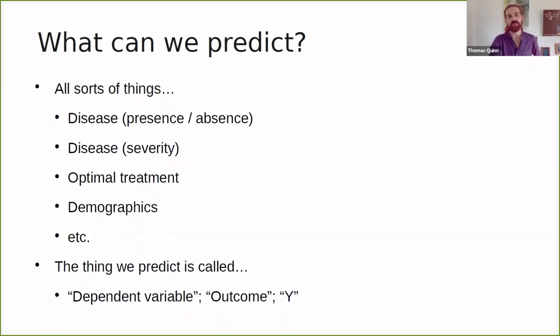So what can we predict? Well, all sorts of things. We can predict disease as in the presence or absence of disease. We can predict disease in terms of severity. We could predict the optimal treatment for a disease. We could predict demographic factors and so on. The things we predict are often called a dependent variable, which is common language in statistics, or you might just call it an outcome or an output, or just give it the variable name Y.